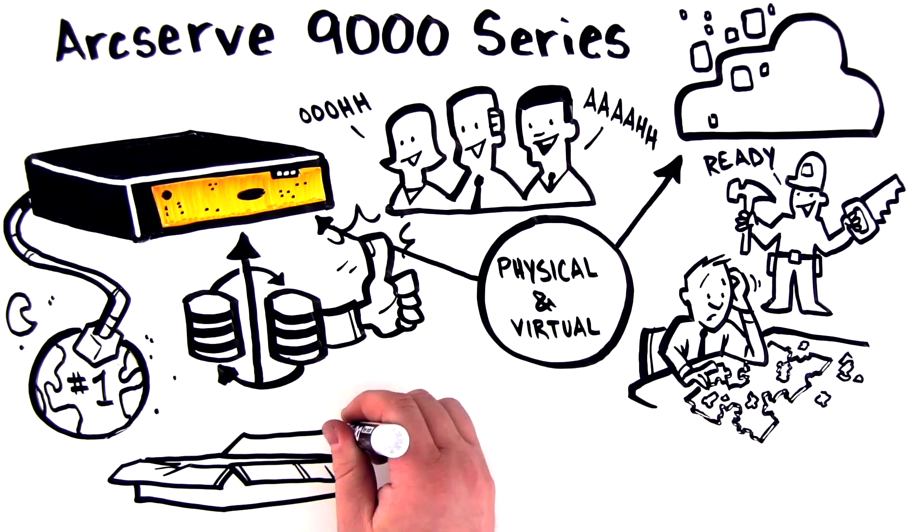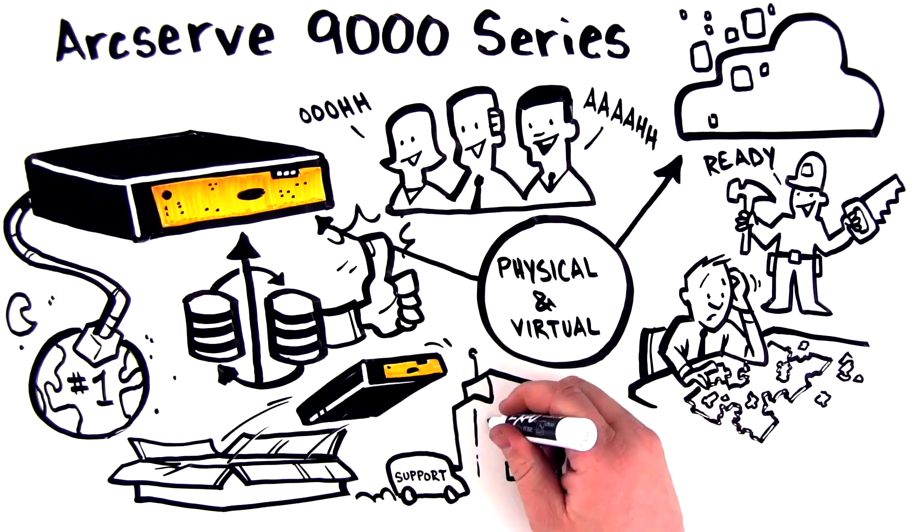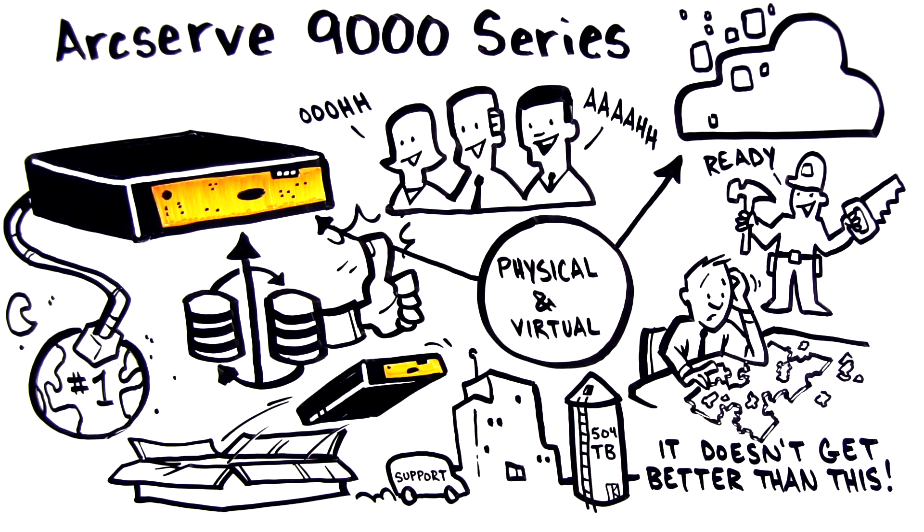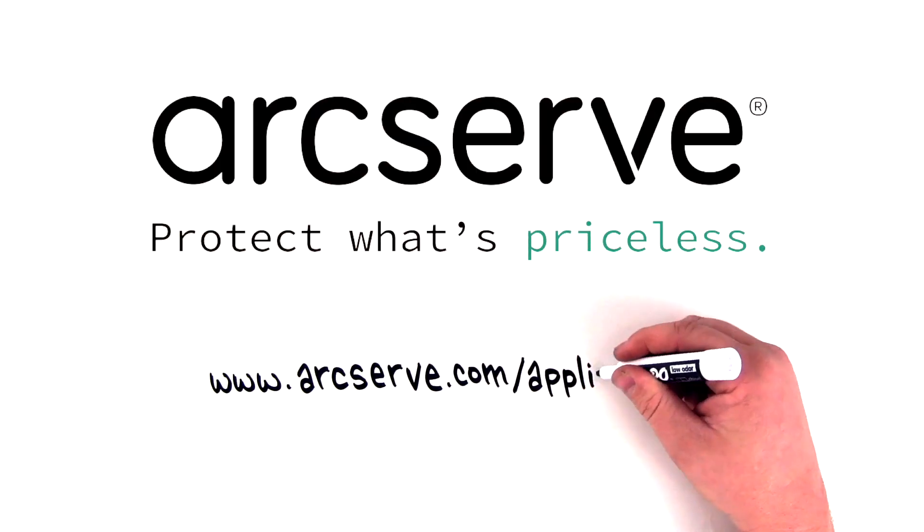Unbox and deploy in just 15 minutes. With on-site support in as little as four hours and effective capacity of up to 504 terabytes, it doesn't get better than this. Find out more by visiting arcserve.com/appliances.